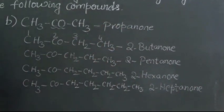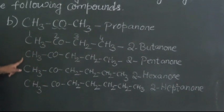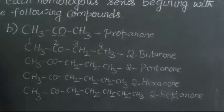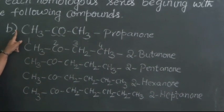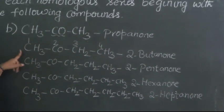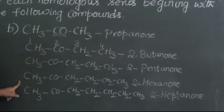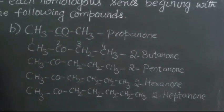So therefore these are the five members of the homologous series by starting as propanone: propanone, 2-butanone, 2-pentanone, 2-hexanone, and 2-heptanone.